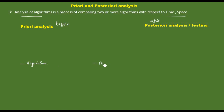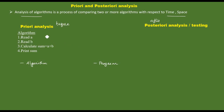In posteriori analysis, we first convert a program into an algorithm, then execute it on a machine. Suppose we have a problem to add two numbers — the algorithm performs a posteriori analysis.